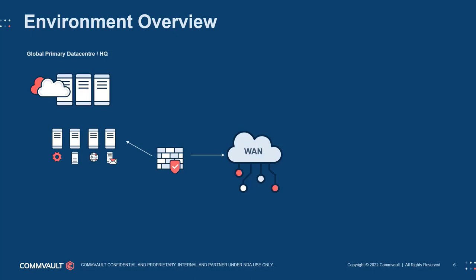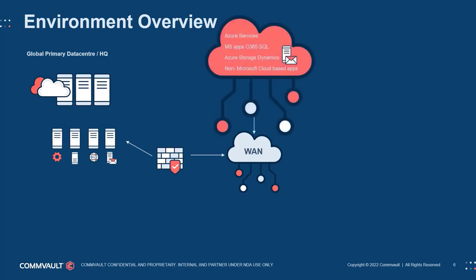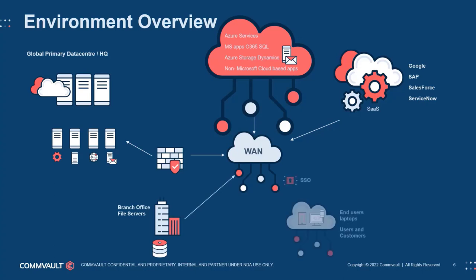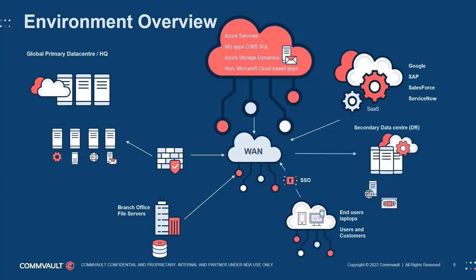Next, the customer describes their other sites and you can begin to see the bigger picture. The customer is using some Microsoft O365 applications in Azure, in addition to hosting some of their own custom applications as Azure VMs. They also have a number of SaaS applications outside of Azure, a remote branch office hosting some local file services, and a number of employees and customers who work remotely and access a number of services remotely. Finally, they have a secondary data center used for disaster recovery of the main HQ. You will also need to understand the data profile within each site.